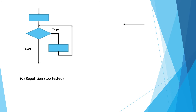Look at the third control structure — repetition. There are two types: top-tested and bottom-tested. In top-tested, the condition is tested first. If it evaluates to true, the next processing is carried out and it again goes for the next repetition — the next iteration. So in top-tested, the condition is checked first, then processing is done, then the process repeats for the next value.